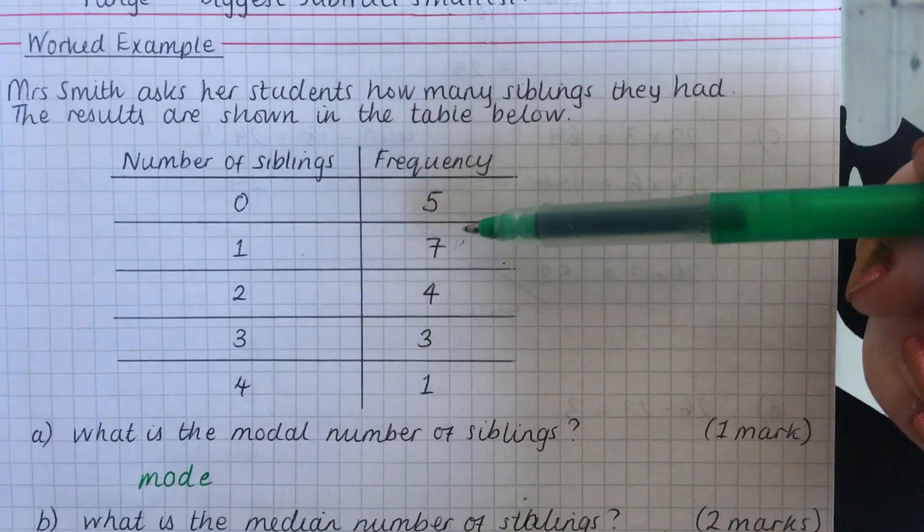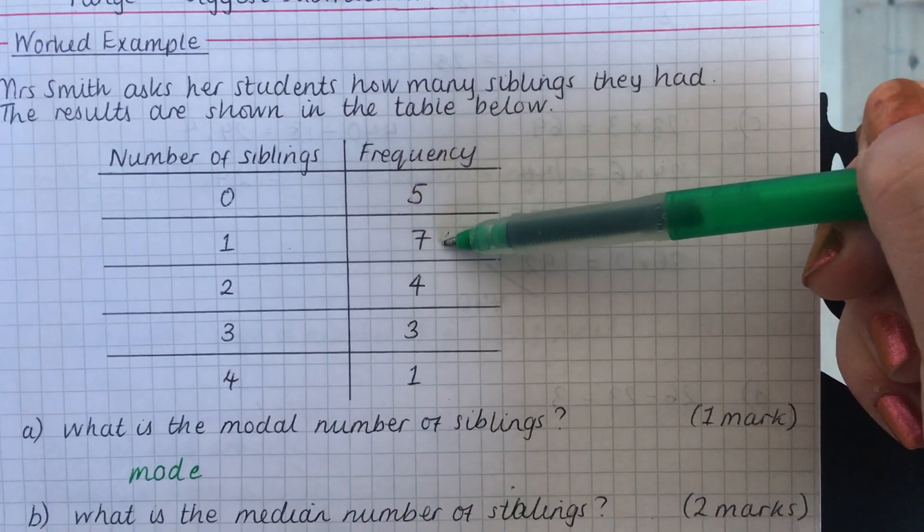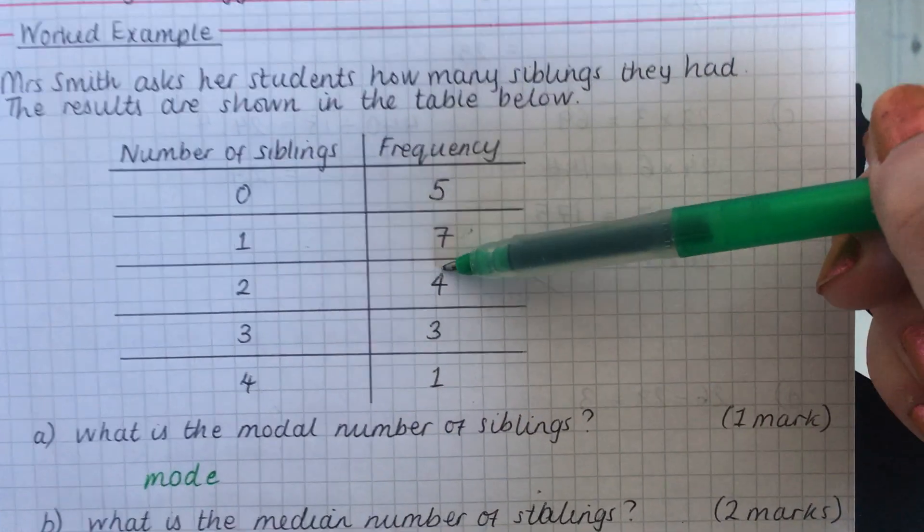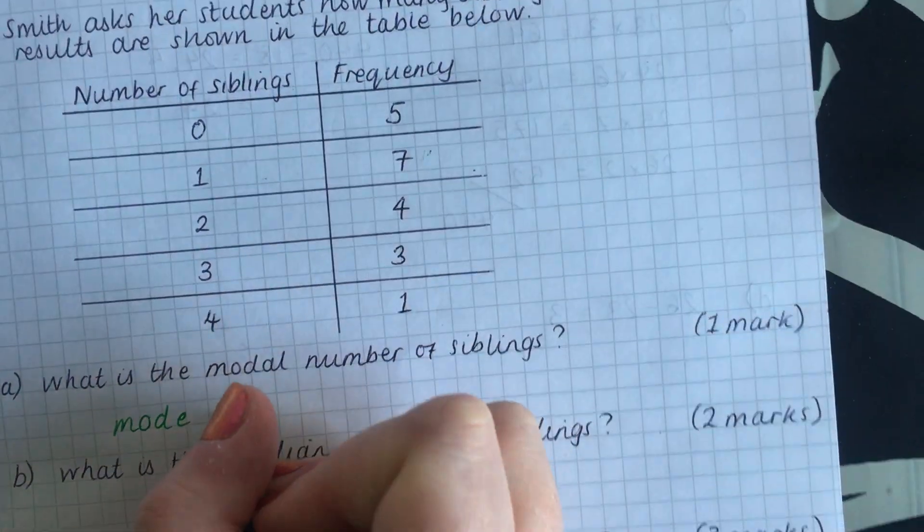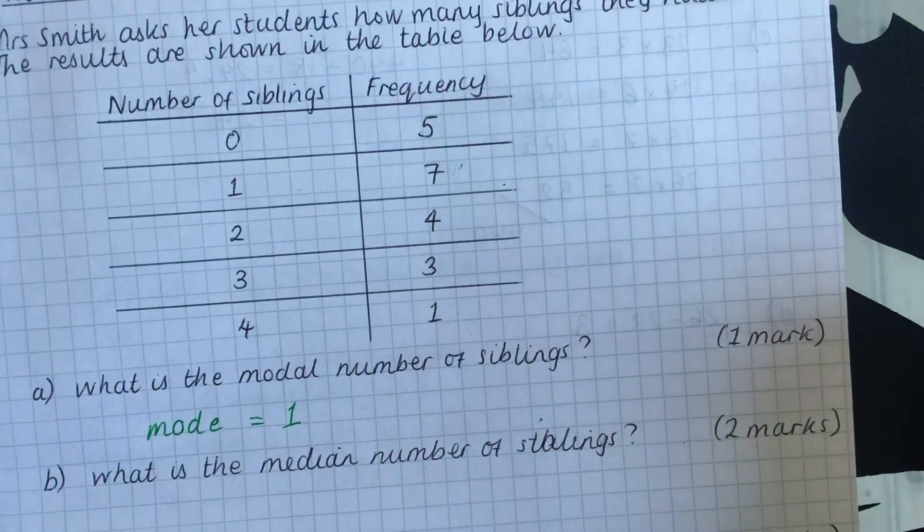Only four had two, etc. So it's not seven that's the mode. It's one that's the mode, but it's seven that tells us that one is the mode. So the mode is one sibling.